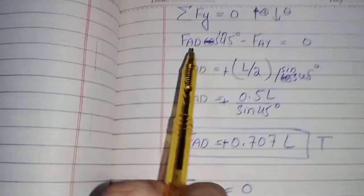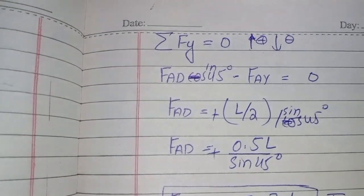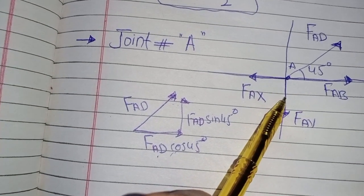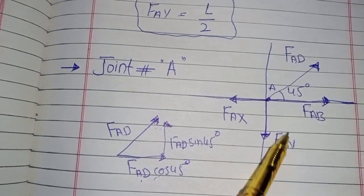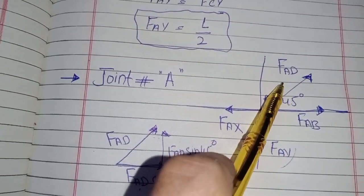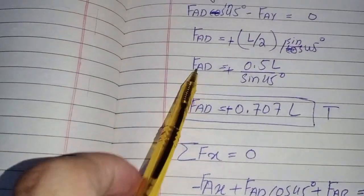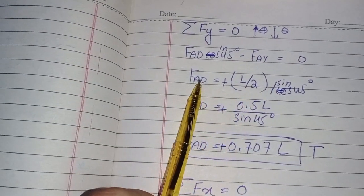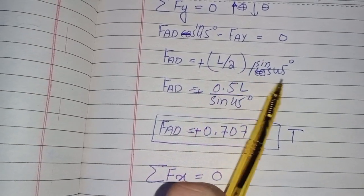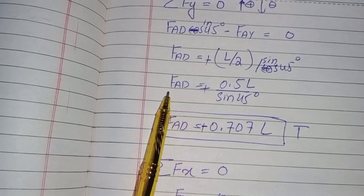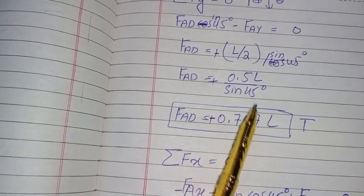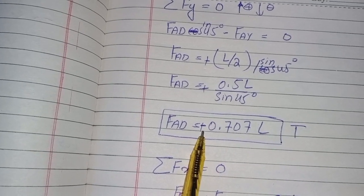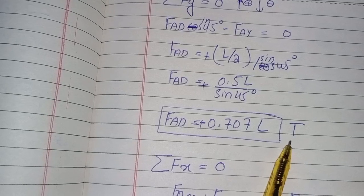Taking summation of forces in the y-direction equal to zero: since there are only two vertical forces — the vertical component of F_AD and the known F_ay — we can easily find F_AD. So F_AD sin45° plus F_ay equals zero, giving F_AD equal to minus F_ay divided by sin45°, which equals 0.5L divided by sin45°, which equals 0.707L. The positive sign confirms my assumption was correct — the member is in tension.